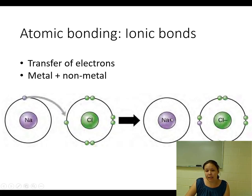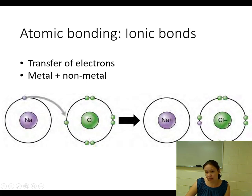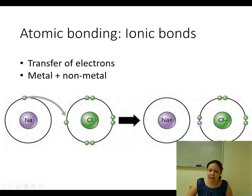Sodium, because it gave up an electron, has a plus one charge. Chlorine, because it accepted one electron, has a minus one charge. We can see that the electron that came from sodium is now on chlorine.